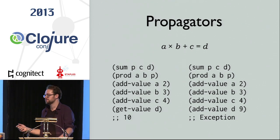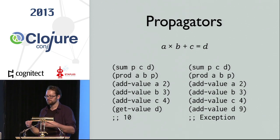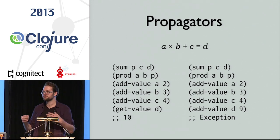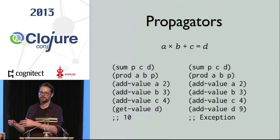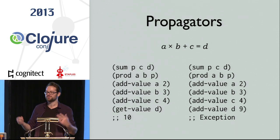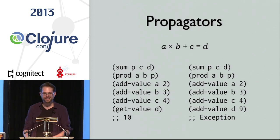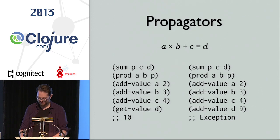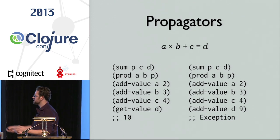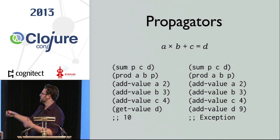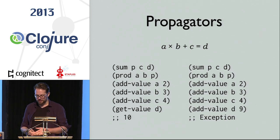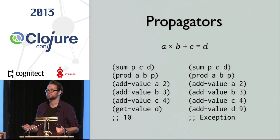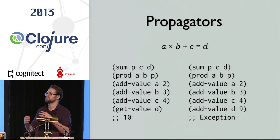This is the method by which you extend your relations in the language — you take normal Clojure functions and lift them up to propagators. If you've ever tried implementing your own CoreLogic functions or relationships, you'll love this because it's so much easier.